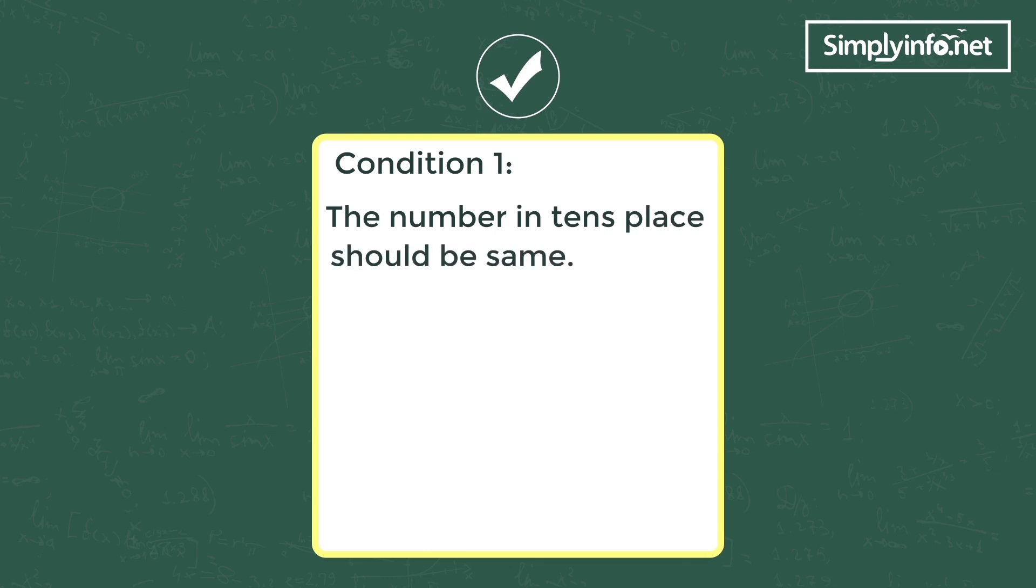Condition 1: The number in tens place should be same. These are the examples for condition 1. First problem 5 and 5, second problem 2 and 2, third problem 6 and 6. 56 into 54, 23 into 27, 62 into 68.